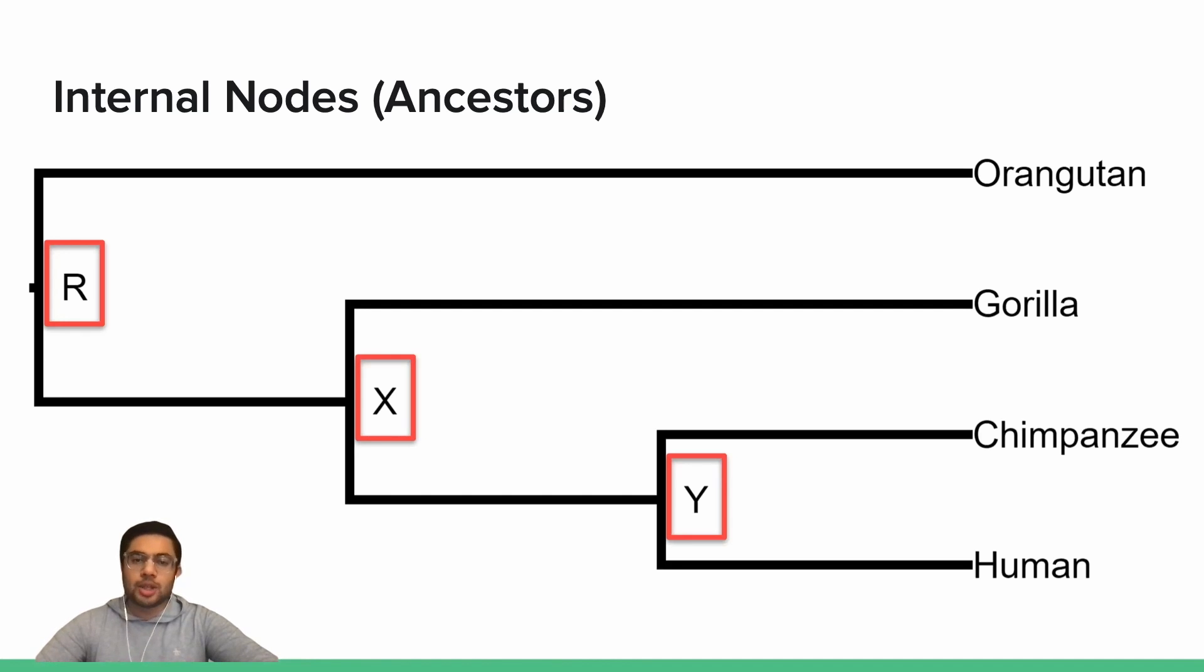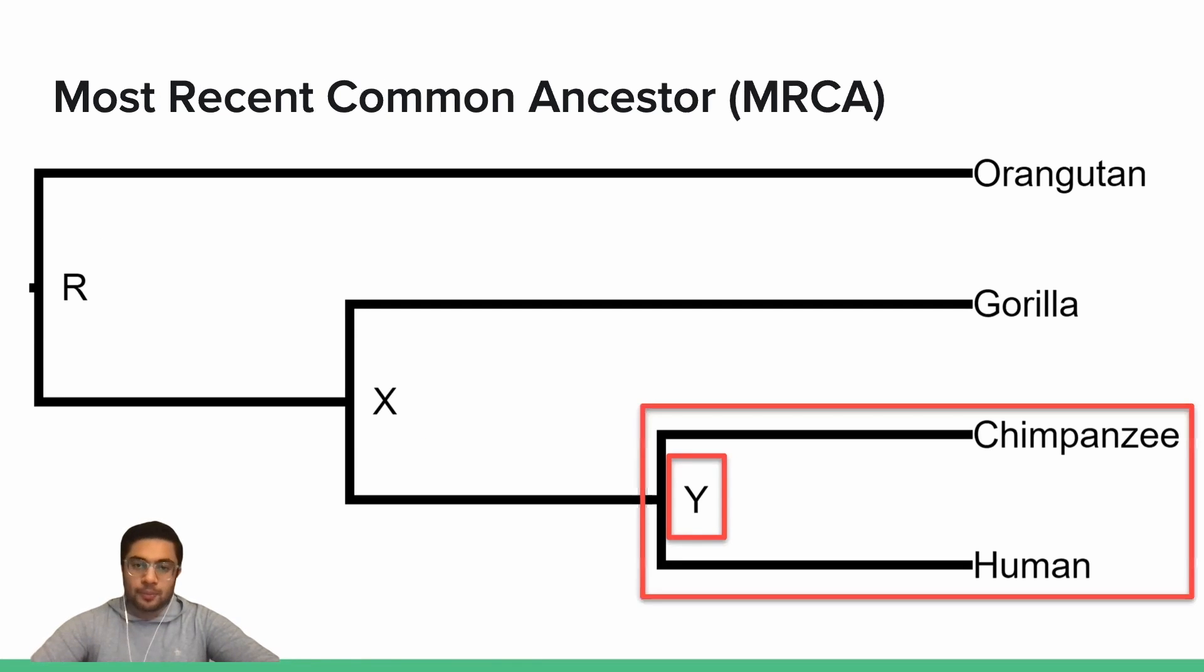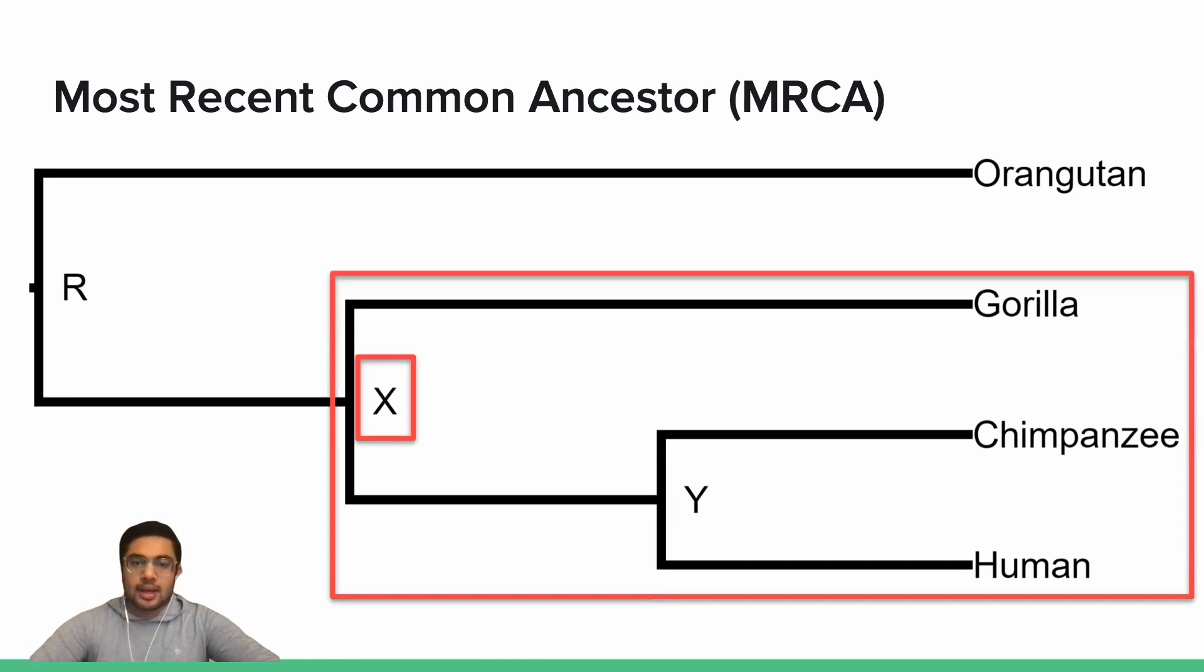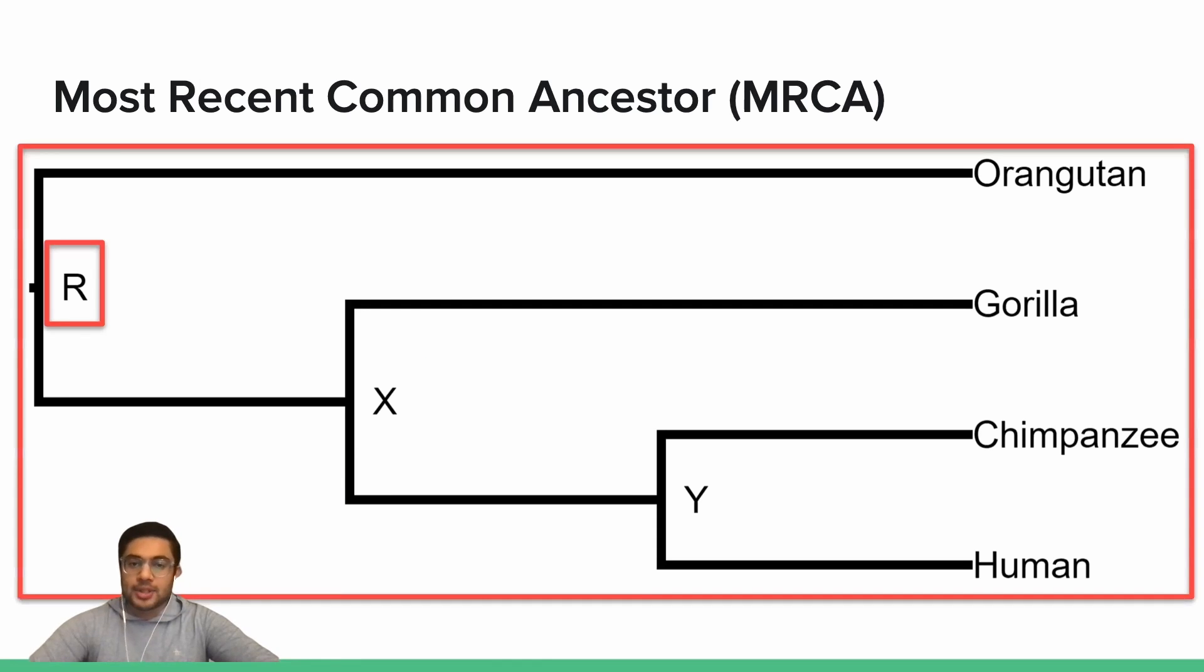Note that each internal node of a rooted phylogeny represents the most recent common ancestor, or MRCA, of all of its descendants, and the root represents the MRCA of all nodes in the phylogeny. For example, Y is the MRCA of chimpanzee and human, X is the MRCA of gorilla and Y, and thus also chimpanzee and human, and R is the MRCA of orangutan, X and Y, and thus also gorilla, chimpanzee, and human.